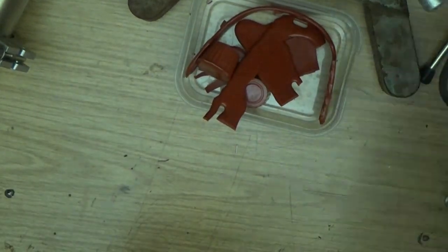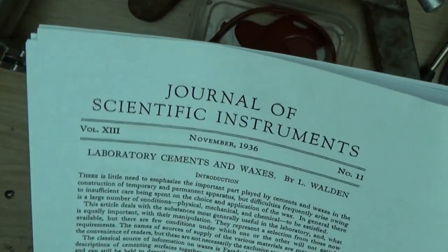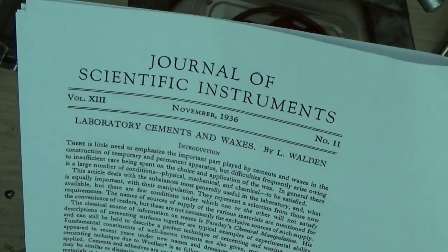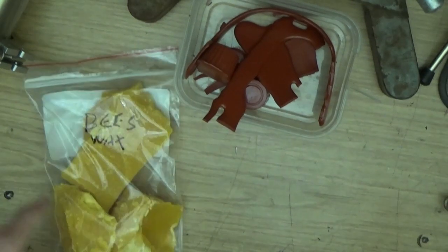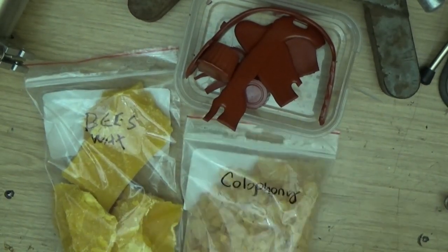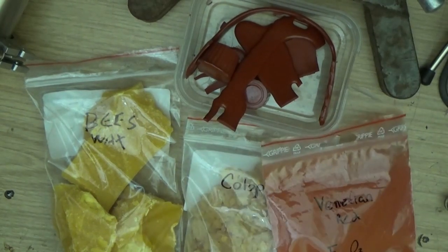And I found this paper, Journal of Scientific Instruments, 1936. That's a review of laboratory cements and waxes. And this calls it Faraday's Wax, and this review describes it as being by weight, one part beeswax, five parts colophony, or pitch, and one part venetian red.